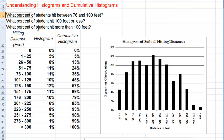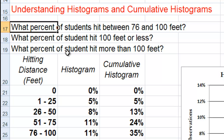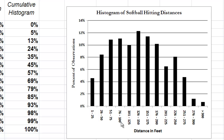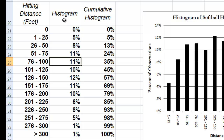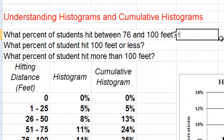Let's suppose we have three questions to help us answer this. First, what percent of students hit between 76 and 100 feet? One way we can answer this is to come to our histogram, look for the interval 76 to 100 feet, see how tall that bar is, and it looks to be about 11%. Indeed, when we go to our table and look for 76 to 100 feet, we have an entry of 11%.